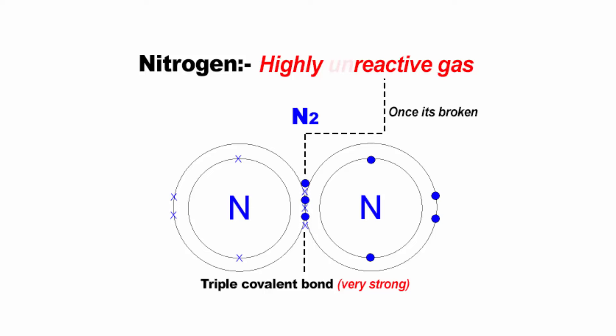Once the strong triple bond is broken, nitrogen atoms are very reactive. So, the whole meaning of the nitrogen cycle is to break the nitrogen molecules so that it can be utilized by plants and animals. Now, the question is, how to break the nitrogen molecule?